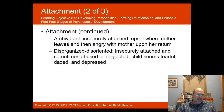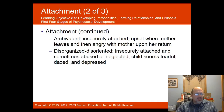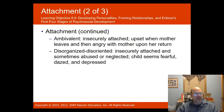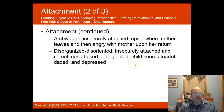Ambivalent attachment is where the child is insecurely attached — upset when the mother leaves and angry with the mother upon her return. Disorganized attachment is where the child appears disoriented, insecurely attached, and sometimes may have been abused or neglected — the child seems fearful, dazed, and depressed. This can be related to childhood trauma as well.